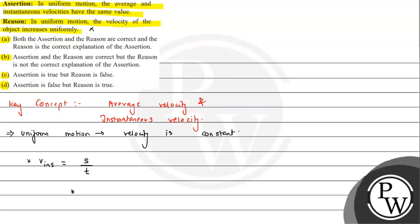In uniform motion, equal displacement takes place in equal intervals of time. For average velocity, we write S1 plus S2 plus S3 divided by T1 plus T2 plus T3 and so on. Because displacement is the same in each equal interval of time, this can be written as nS upon nT, which comes out to be S by T — which equals the instantaneous velocity.